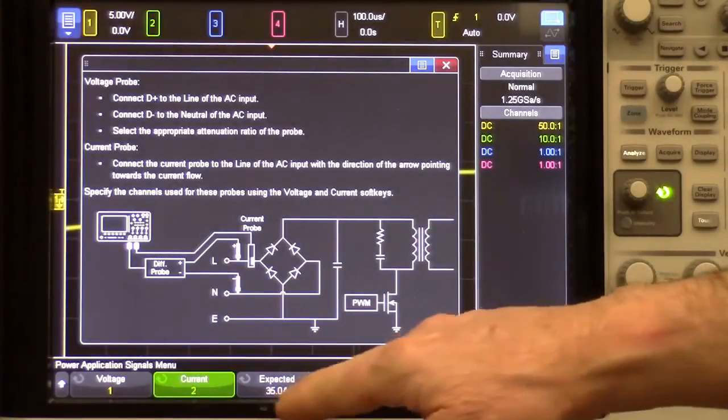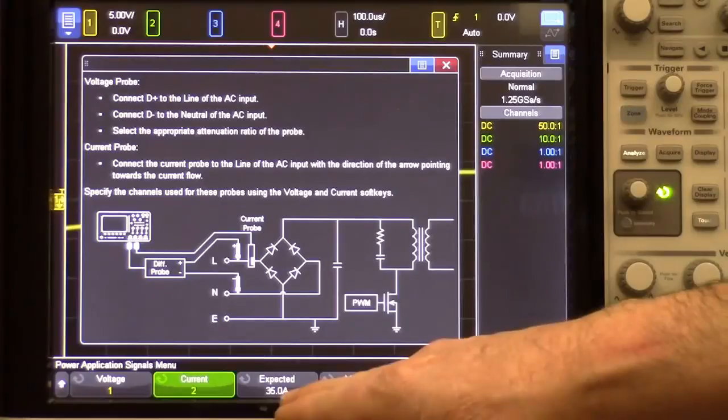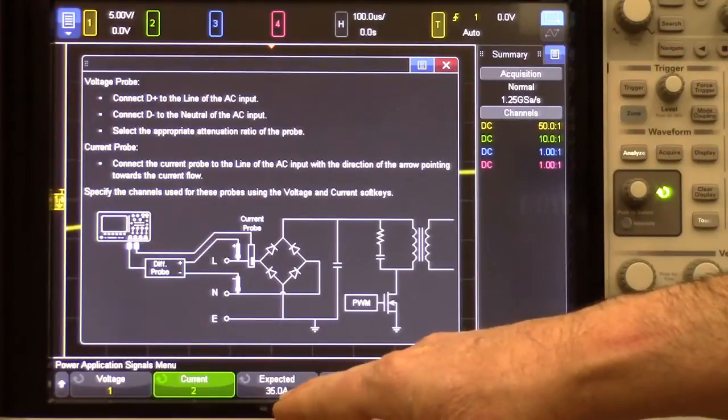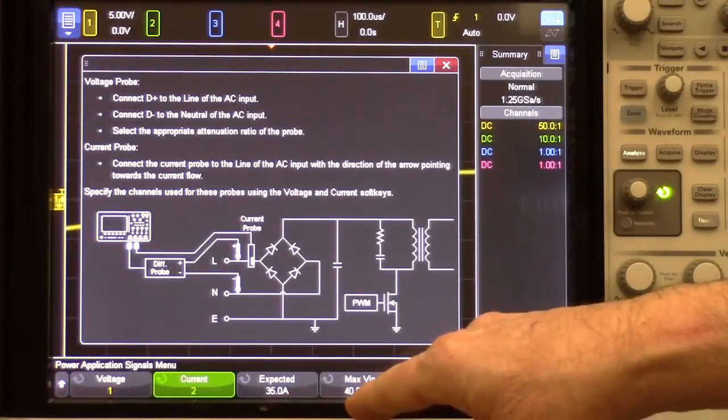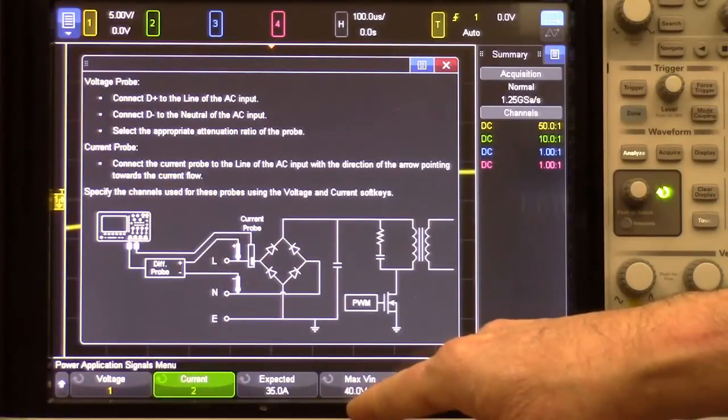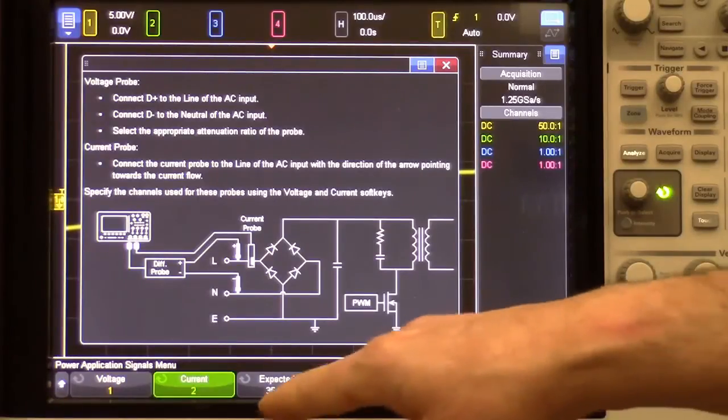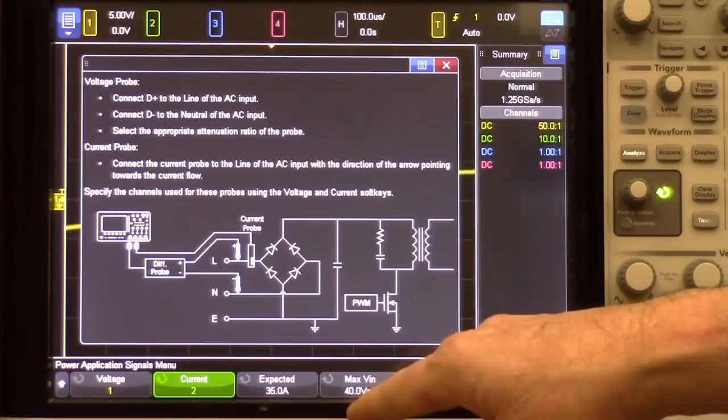And then, you have to enter what your expected maximum inrush or peak current will be and your maximum input voltage peak-to-peak. Now, this one's a little bit unknown, and we have the default settings here optimized for our demo board.